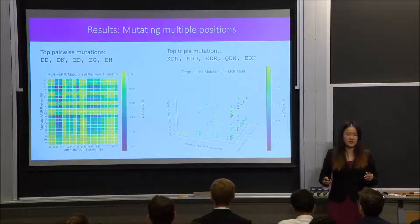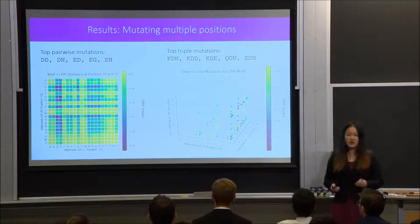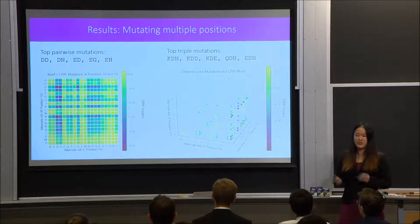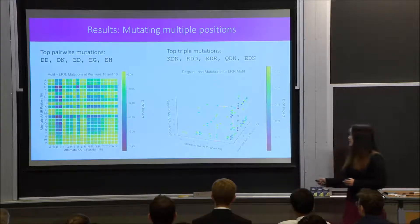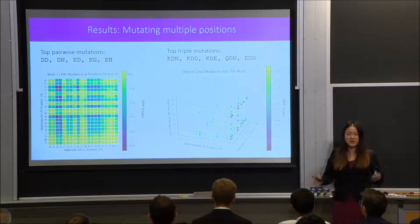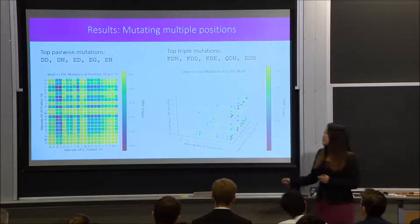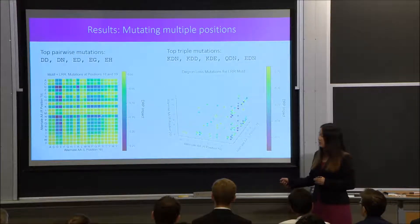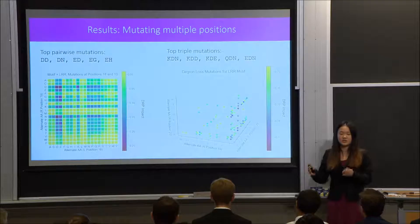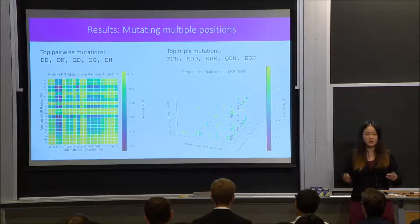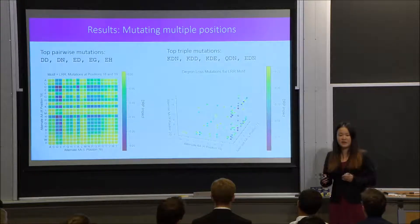In addition to single-position mutations, we also mutated multiple positions to see whether there would be any compounded effect. Shown here on the left are the mutation impact scores for pairwise mutations, and on the right is a scatter plot of the top 1% of triple mutations at three different positions. A clear pattern arises: high-impact mutations are located in specific positions on the left plot, and on the right they are clustered towards the bottom right corner. Future research could investigate whether we can generalize the locations of these high-impact mutations by clustering.